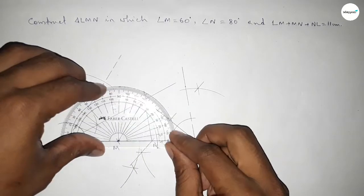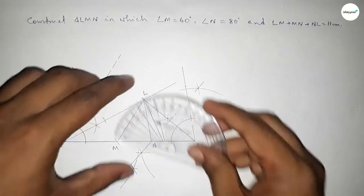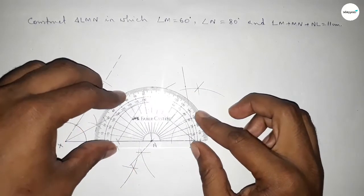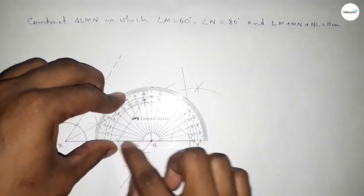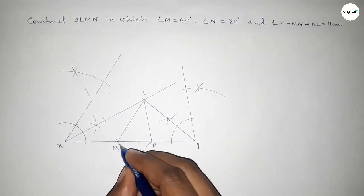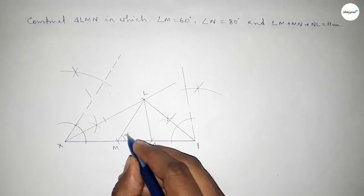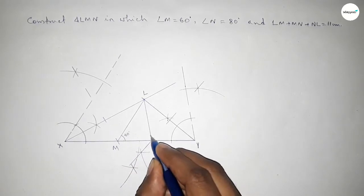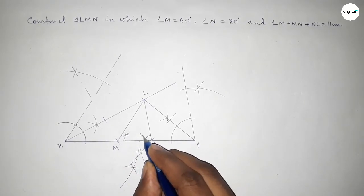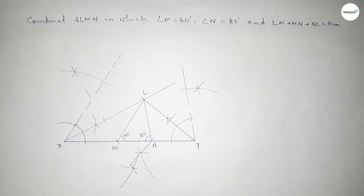Now checking the angles: putting the protractor and checking — angle M is 60 degrees and angle N is 80 degrees, perfectly. So angle M equals 60 degrees and angle N equals 80 degrees.